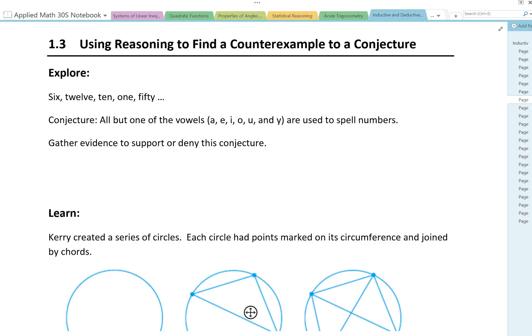6, 12, 10, 1, 50. So we can see this is a pattern. Now the conjecture here says that all but one of the vowels A, E, I, O, U, and Y are used to spell numbers. Gather evidence to support or deny this conjecture.